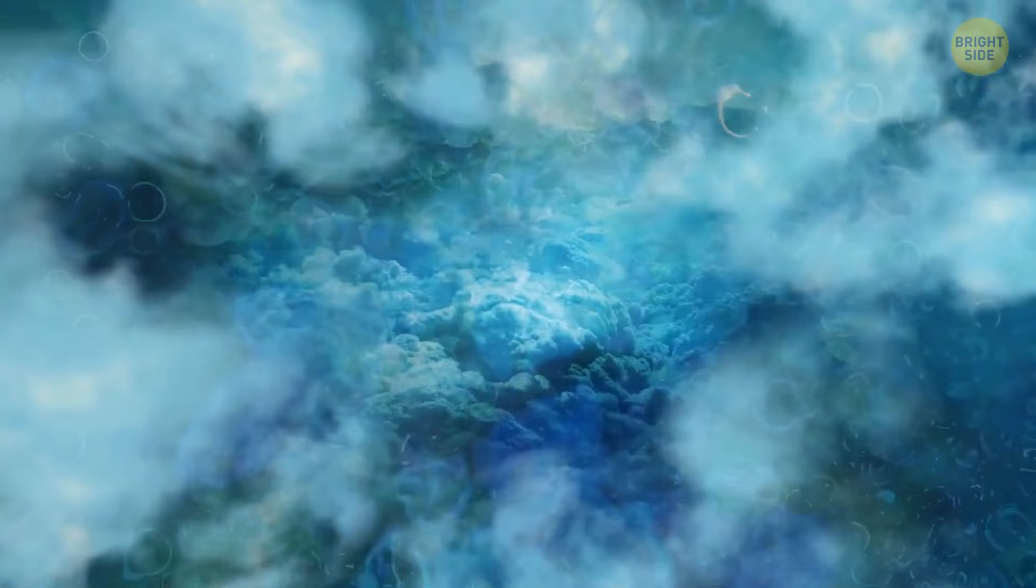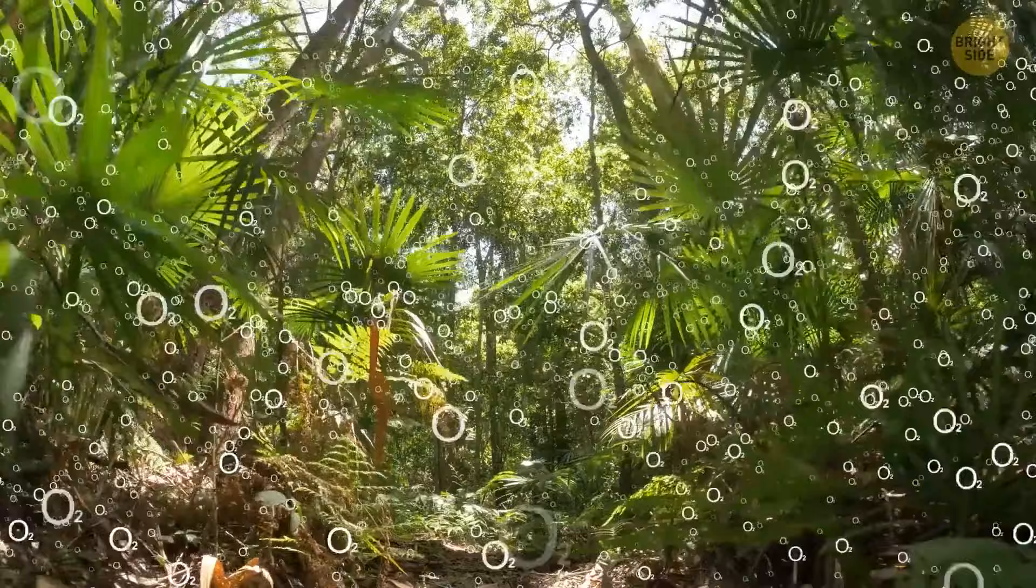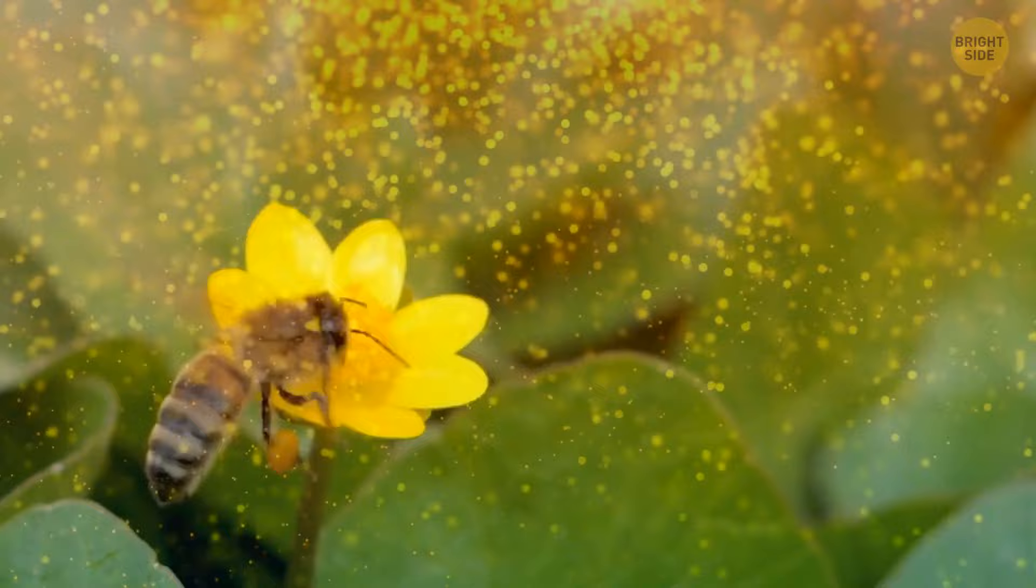Now imagine all the living things on Earth, like plants, animals, and microbes, as a giant team working together. They have different jobs, but they all do their thing to make the planet a better place to live. For example, plants make oxygen that we breathe, and animals help pollinate flowers. Together, they form the biosphere, which is like the Earth's team of life.